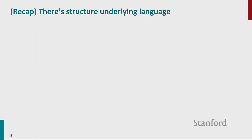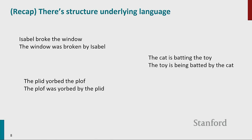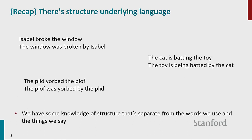There's structure underlying language — this is a recap since we've done dependency parsing lectures. If we have a sentence like 'Isabel broke the window' and 'the window is broken by Isabel,' there's some kind of relation between them — a passive alternation. And this exists for other similar sentence pairs too. We can even use made-up words and you can still see it's a passive alternation. So it seems we have knowledge of structure that's separate from the words we use.